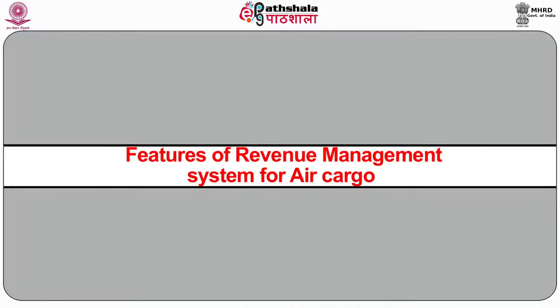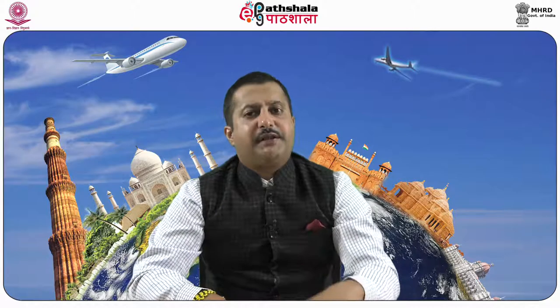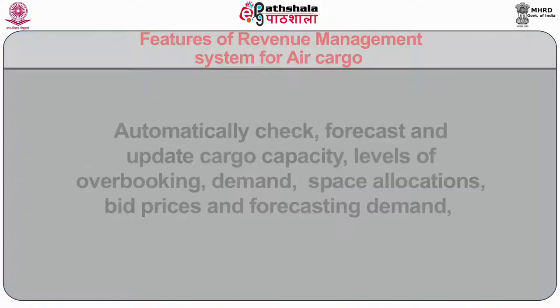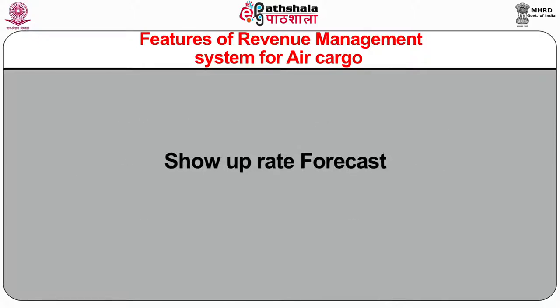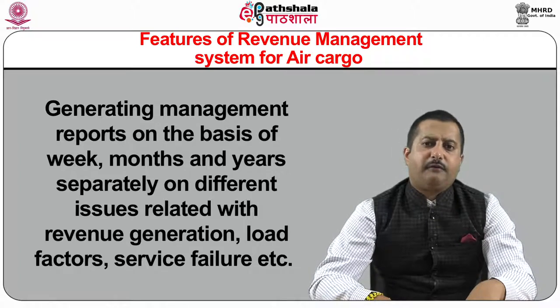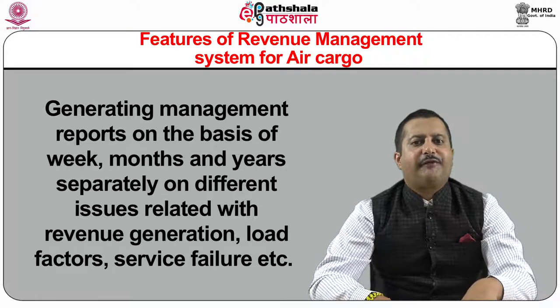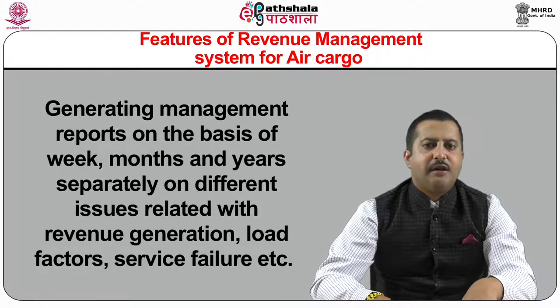Features of a revenue management system for air cargo: the system should automatically check, forecast, and update cargo capacity, levels of overbooking, demand, space allocations, bid prices, and demand forecasting. It should provide show-up rate forecasting, generate management reports on a weekly, monthly, and yearly basis covering revenue generation, load factors, and service failures. It should also provide customer valuation and performance monitoring of cargo airlines, shipments, and cargo agents, and effective management of cargo flights with revenue maximization.